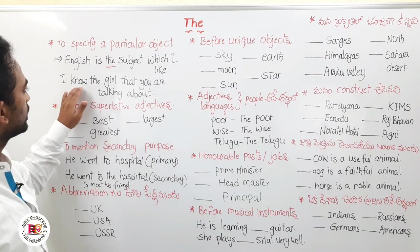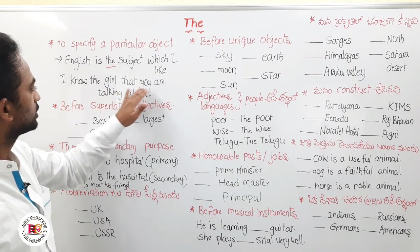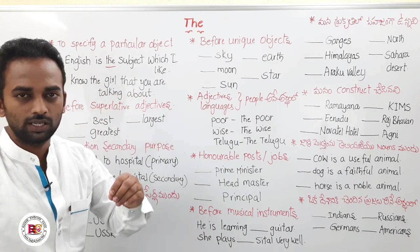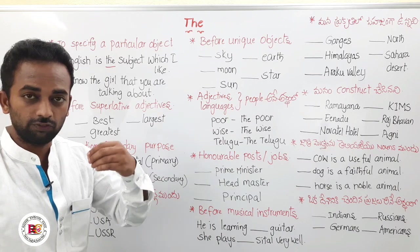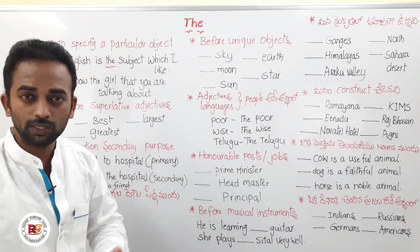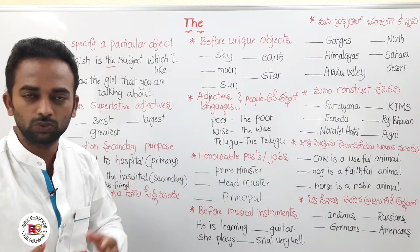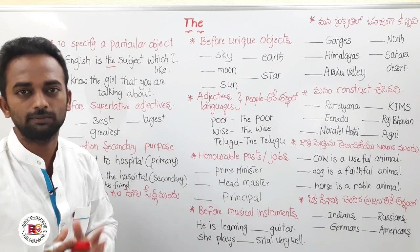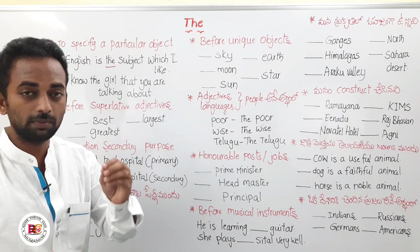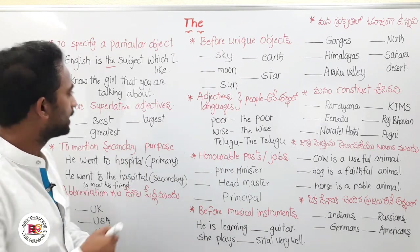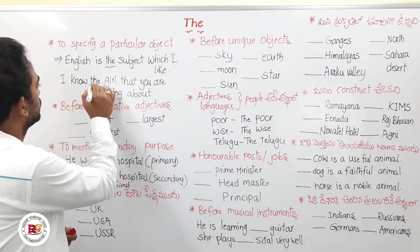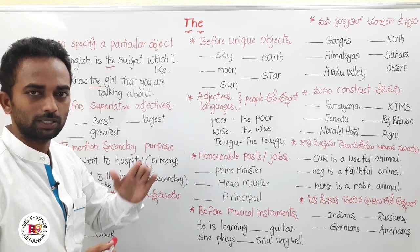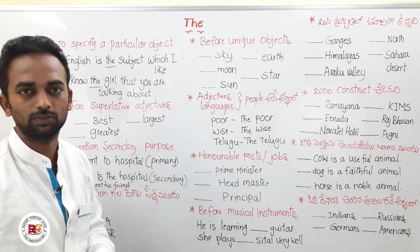So let us see the second point. For example: 'I know the girl that you are talking about.' So we use 'the' when we know the girl that you are talking about.